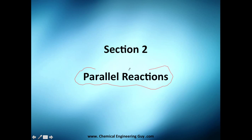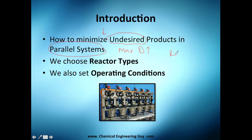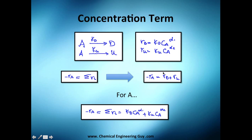Now it's time to analyze our first set of reactions, which are the parallel reactions. We're going to see how to minimize the undesired products and how to maximize our desired products. We're going to use parallel systems — reaction number one and reaction number two — competing to get the desired and undesired products. We can do this either by choosing different reactor types that favor our conditions or by setting our operating conditions, or a mix of both.